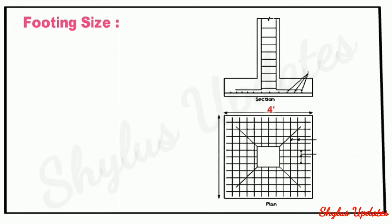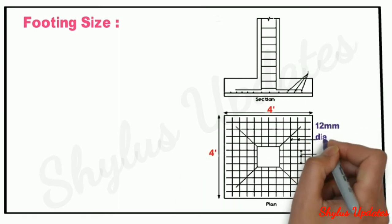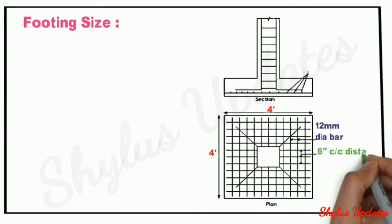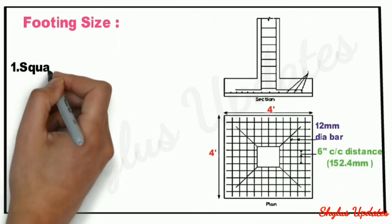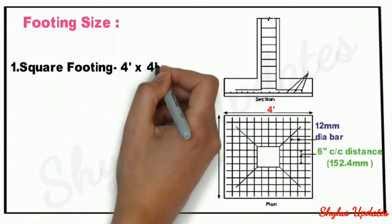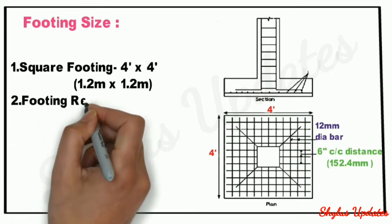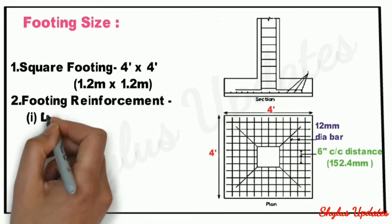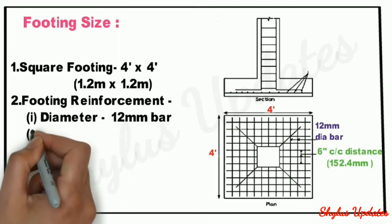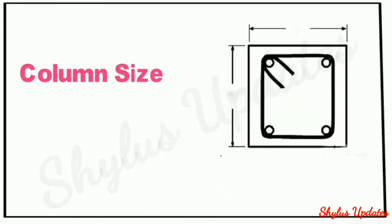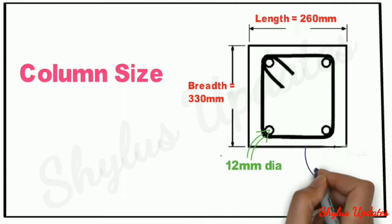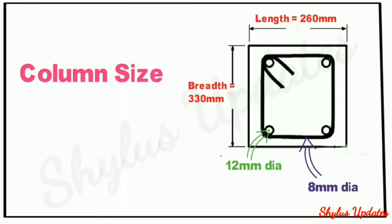First, let us see the footing size. Square footing is 4 feet x 4 feet, i.e. 1.2m x 1.2m. Footing reinforcement: diameter of bar is 12mm and the spacing is 6 inches center to center. Column size: length of column is 260mm and breadth of column is 330mm. Main bar reinforcement diameter is 12mm and the lateral ties, i.e. ring bar or stirrups, is 8mm.